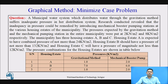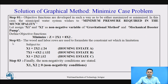Now let us convert this problem into LPP form. Our objective is to minimize the pressure required in the municipality for water distribution. x1 and x2 are the two non-negative variables representing the gravitational method and the mechanical booster, respectively. The minimize case is: Z = 2x1 + 8x2. In the second step, we observe the set of constraints for each station A, B, and C. Finally, we apply the non-negativity restriction to the variables.